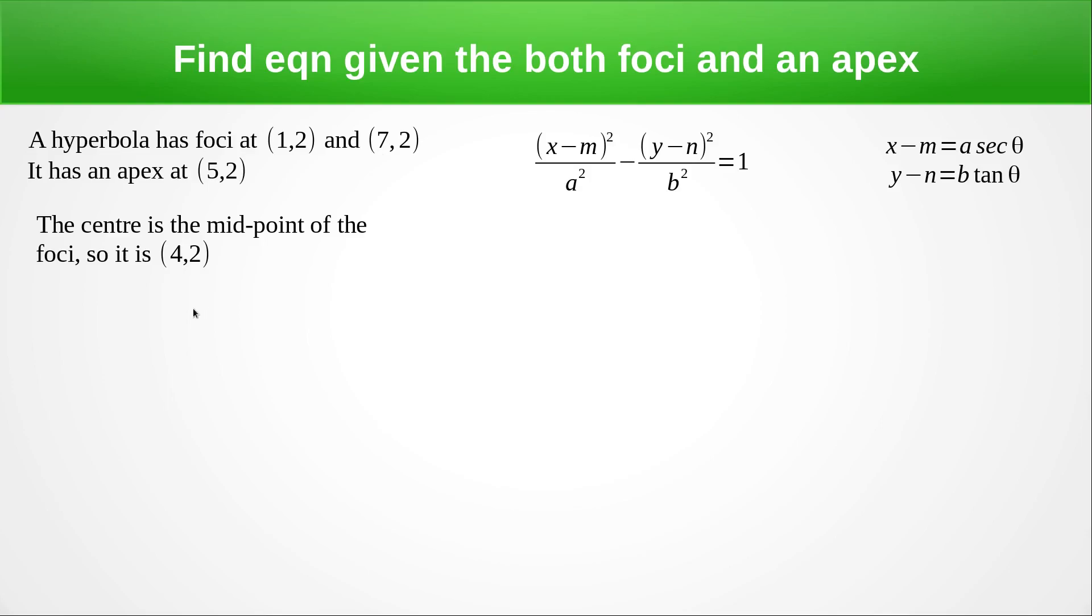Then we're going to find the a value. And remember, the a value is the distance of the apex to the centre. So a has a value of one. Now the c value is the distance of the foci from the centre. So the c value is 3.